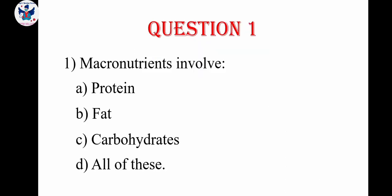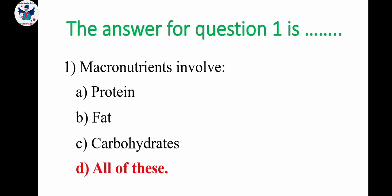The first question is: macronutrients involve — A. Protein, B. Fat, C. Carbohydrates, D. All of these. Macronutrients means it includes all the contents present in the food. So definitely the option will be D, because macronutrients includes proteins, fat as well as carbohydrates. So the answer is all the above.